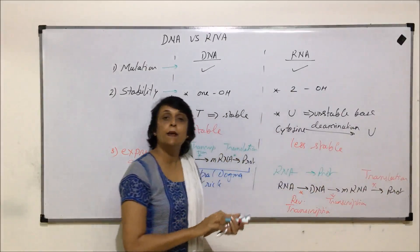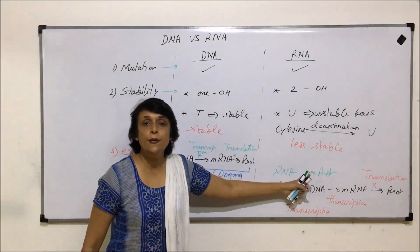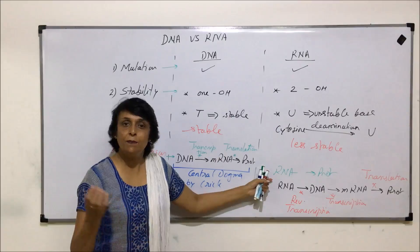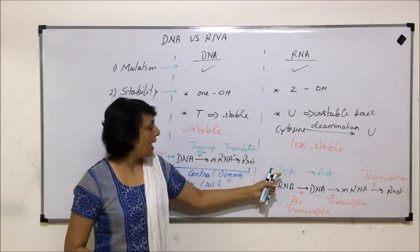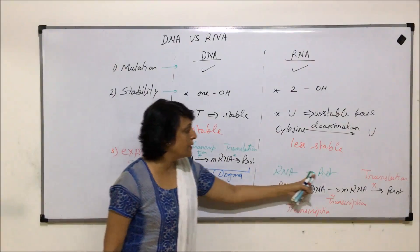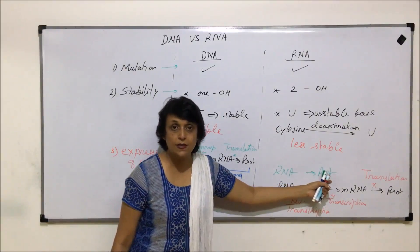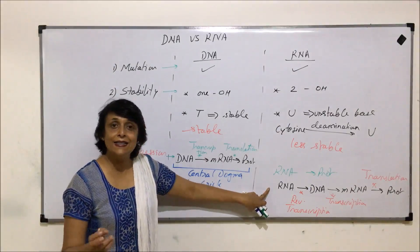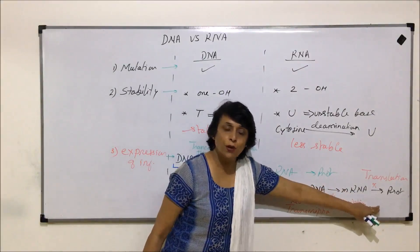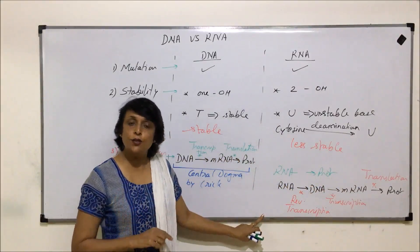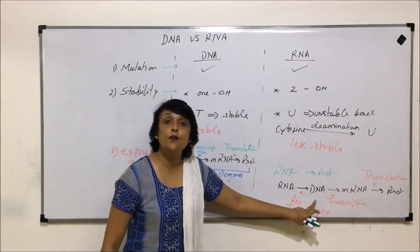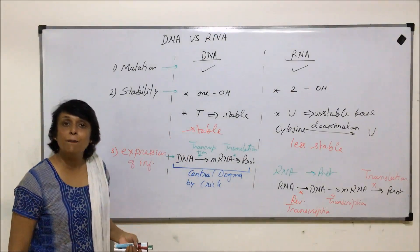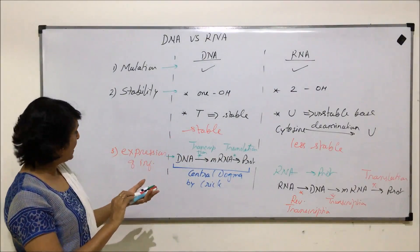RNA helps in protein synthesis in normal cellular function: mRNA brings the message, tRNA brings the amino acids, and rRNA helps in protein synthesis. However, if RNA is the genetic material and has to express its information, it undergoes one additional step — from RNA to DNA — which is known as reverse transcription.